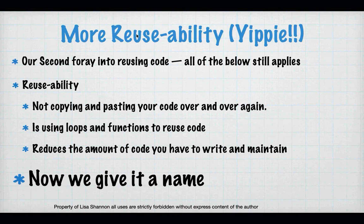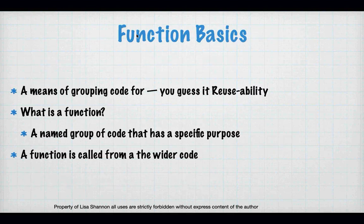Most importantly, you can now give it a name. When you give it a name, you actually turn it from just a block of code that can be reused to something that is named and can be reused. The fact that we're giving it a name allows Python to take that block of code and store it someplace, and we can use it later. Just like when we have a variable and we put a value into that variable, Python stores that and you can go back and get that again and again.